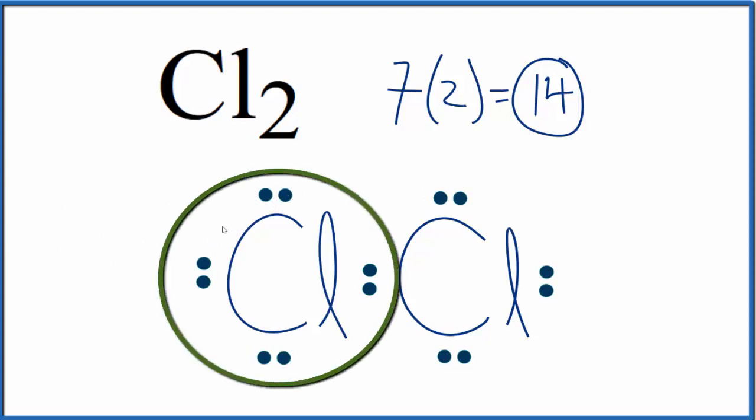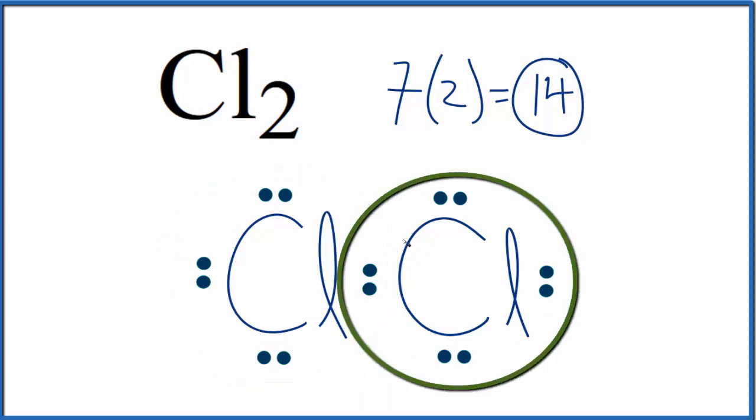This chlorine here has an octet, 8 valence electrons. And this chlorine here has an octet. And they do that because they're sharing this pair of valence electrons.